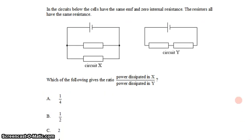In this question, we have two circuits, X and Y, and they have the same EMF, so the voltage coming out of each of these cells is the same, and zero internal resistance, so the external properties of the circuit will have no effect on the voltage coming out.